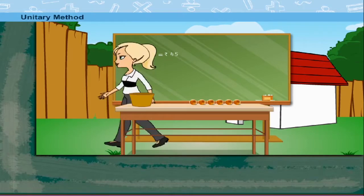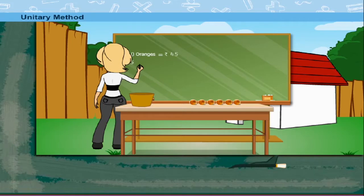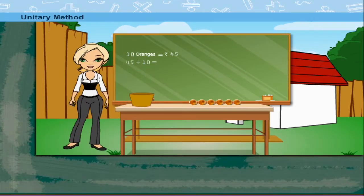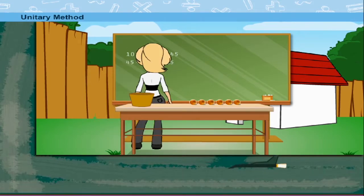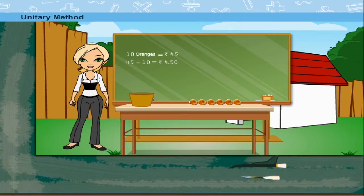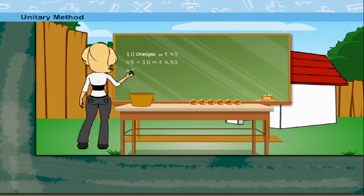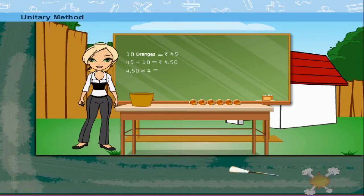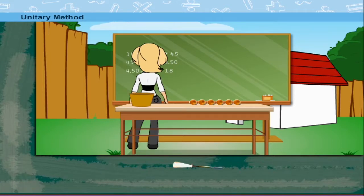Rosie ma'am now calculates. She divides Rs. 45 by 10 to find the cost of 1 orange. It is Rs. 4 and 50 paise. The cost of 4 oranges is Rs. 4.50 multiplied by 4. This is Rs. 18.